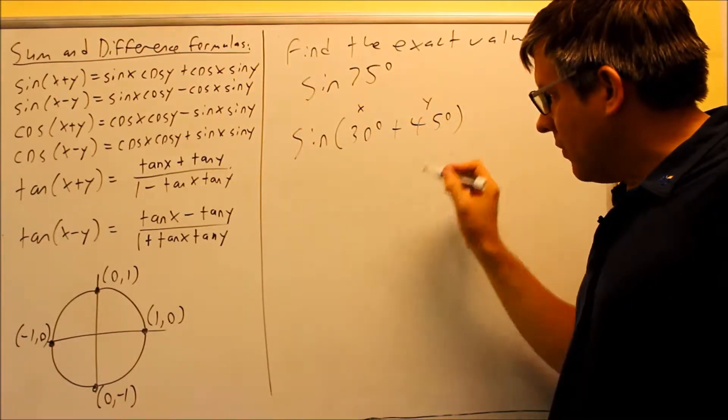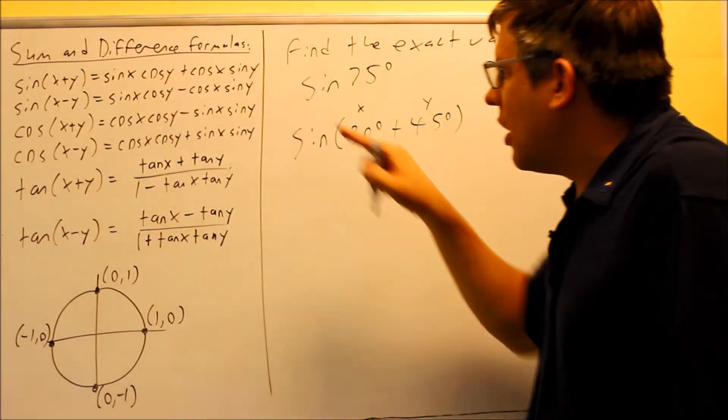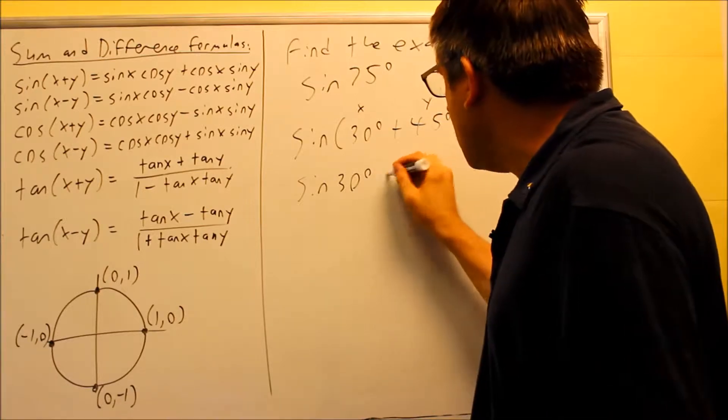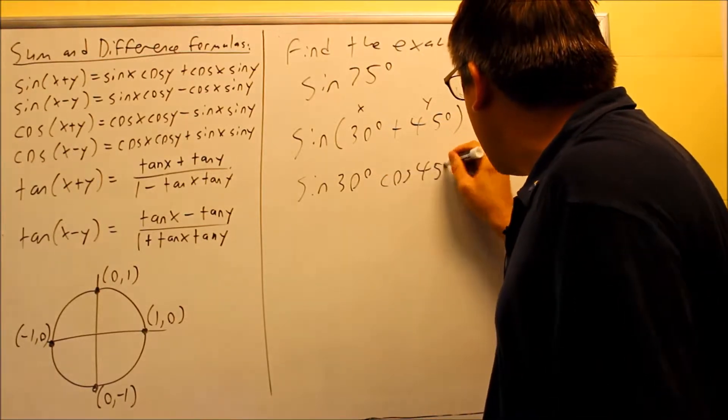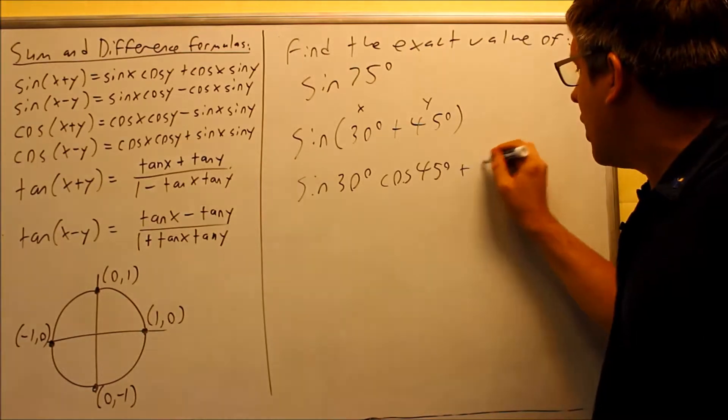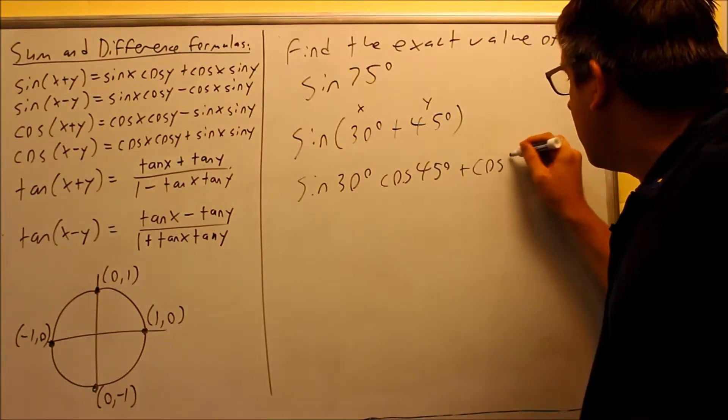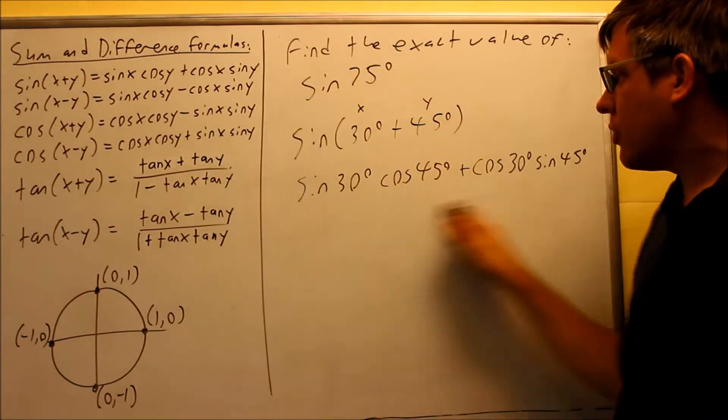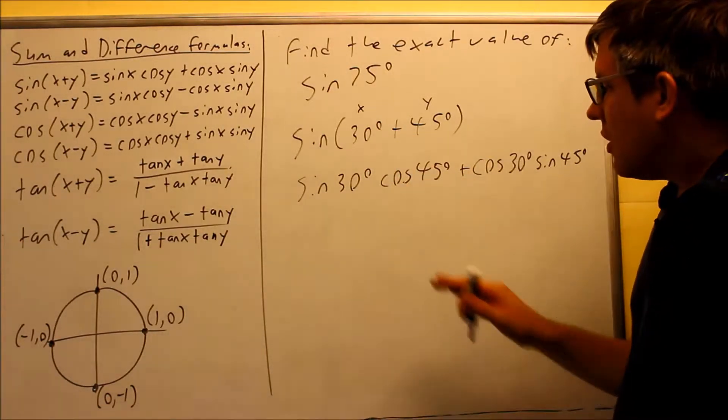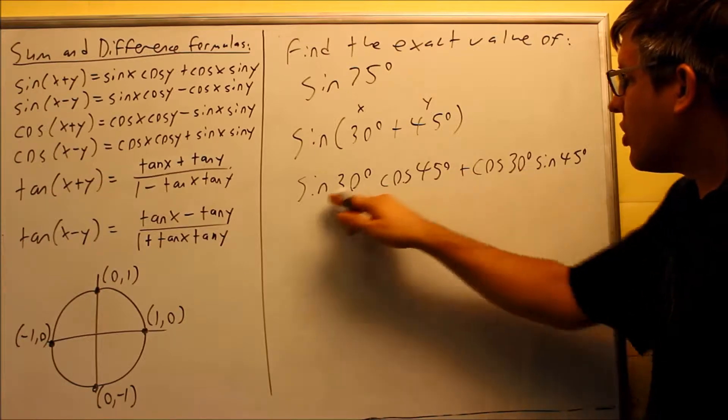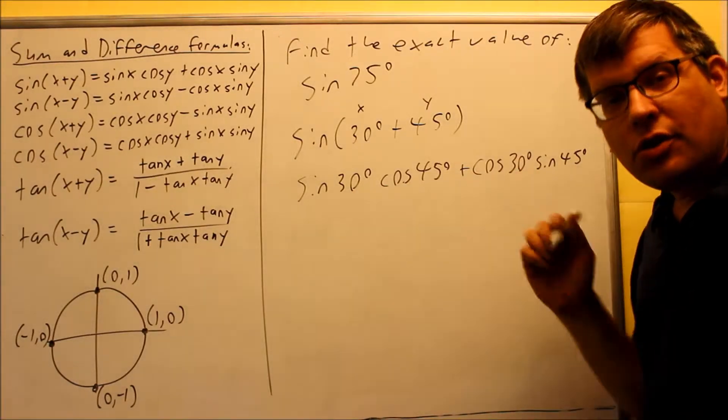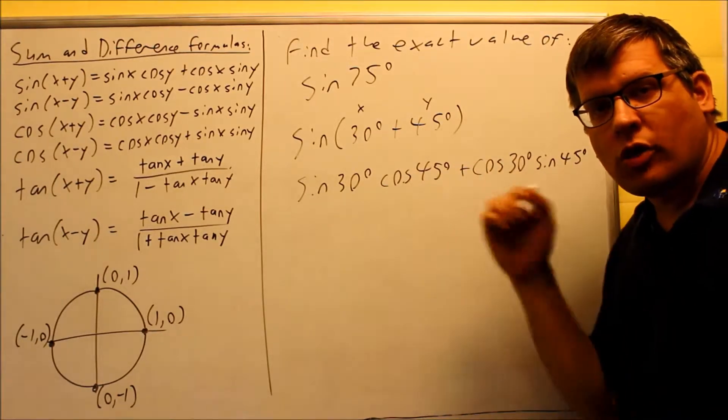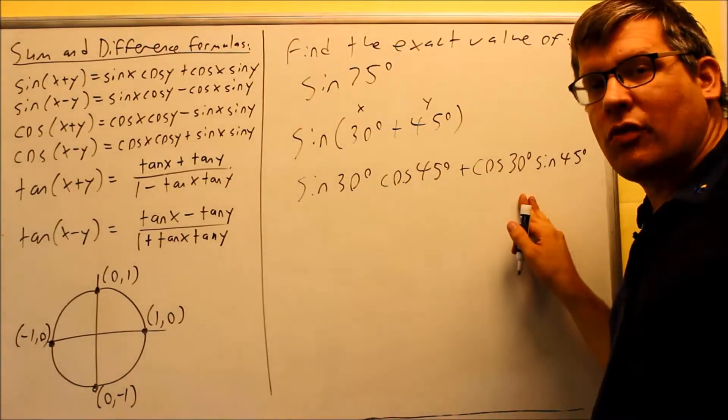So doing it this way, I'm going to expand it out by using the first formula. So I'm going to do sine of 30 degrees and then cosine 45 degrees, and then we have plus cosine 30 degrees, sine 45 degrees. We've used the first formula to break all that up. And everything we have here, every single one of these, is a value we can get off of our unit circle.